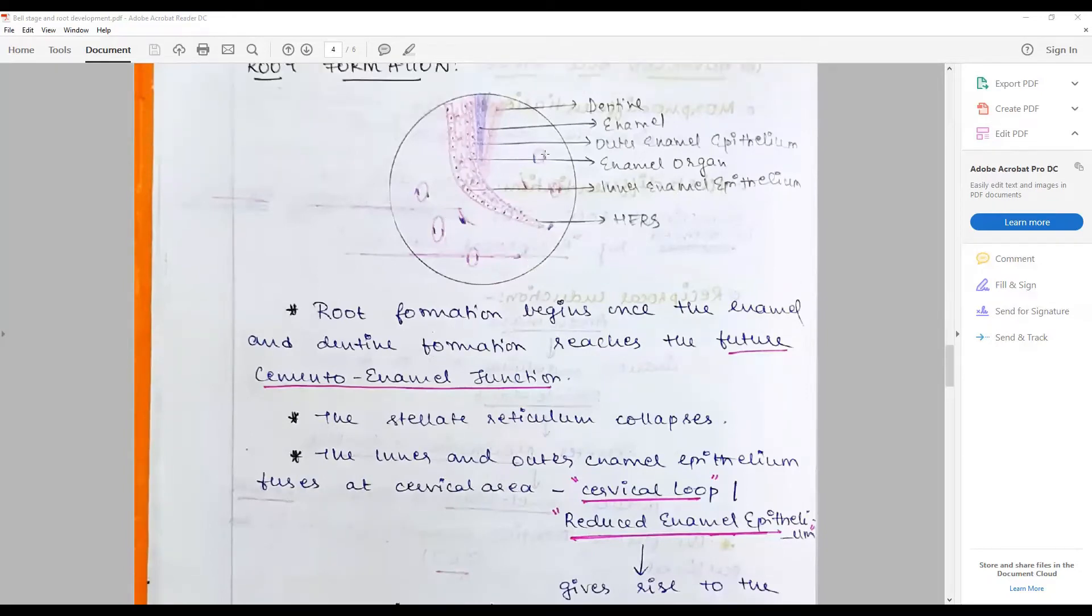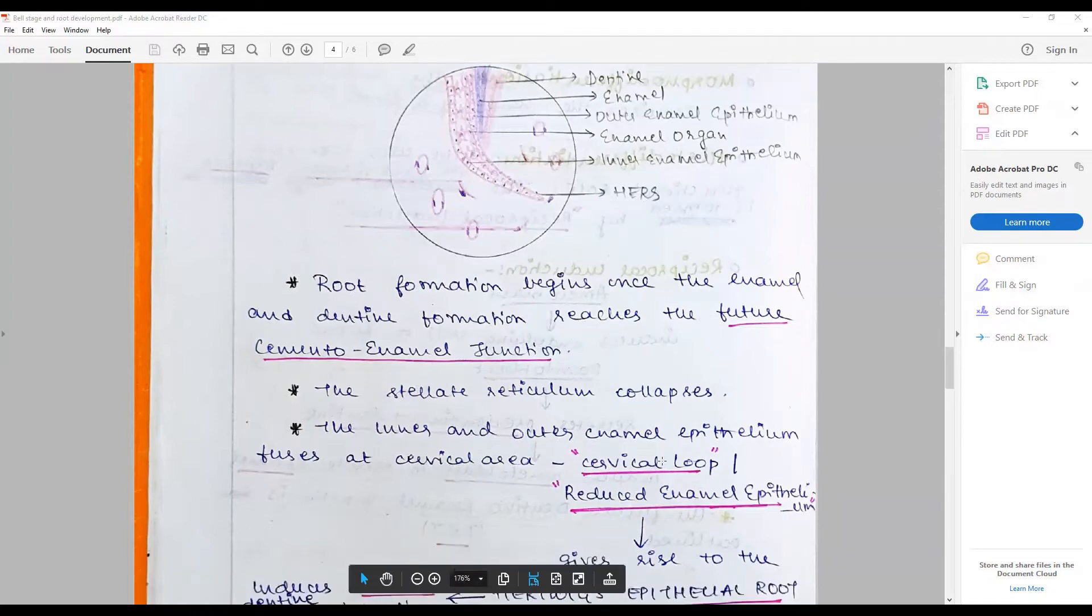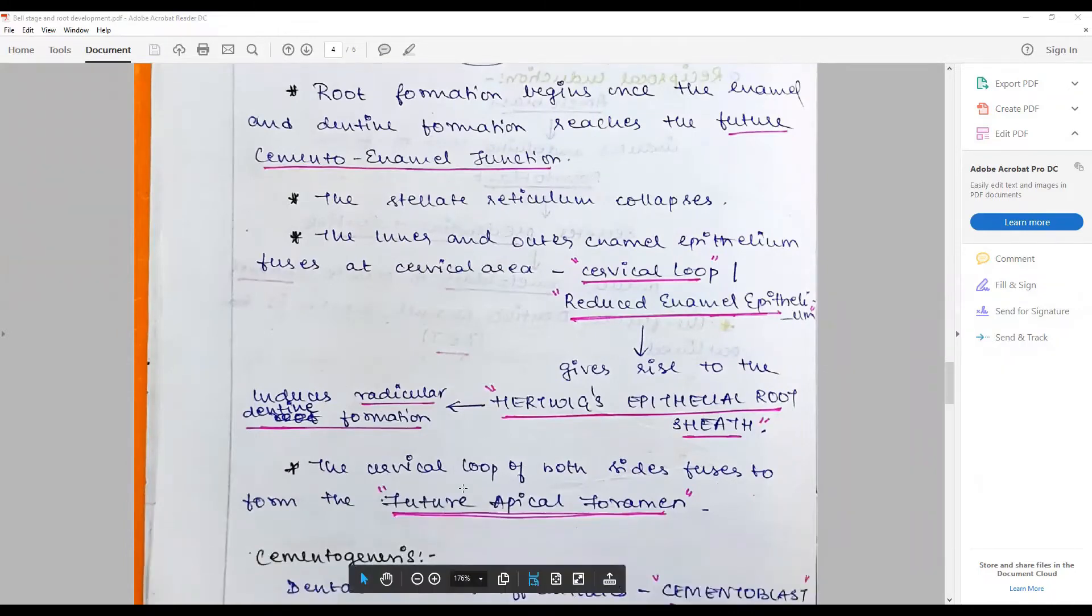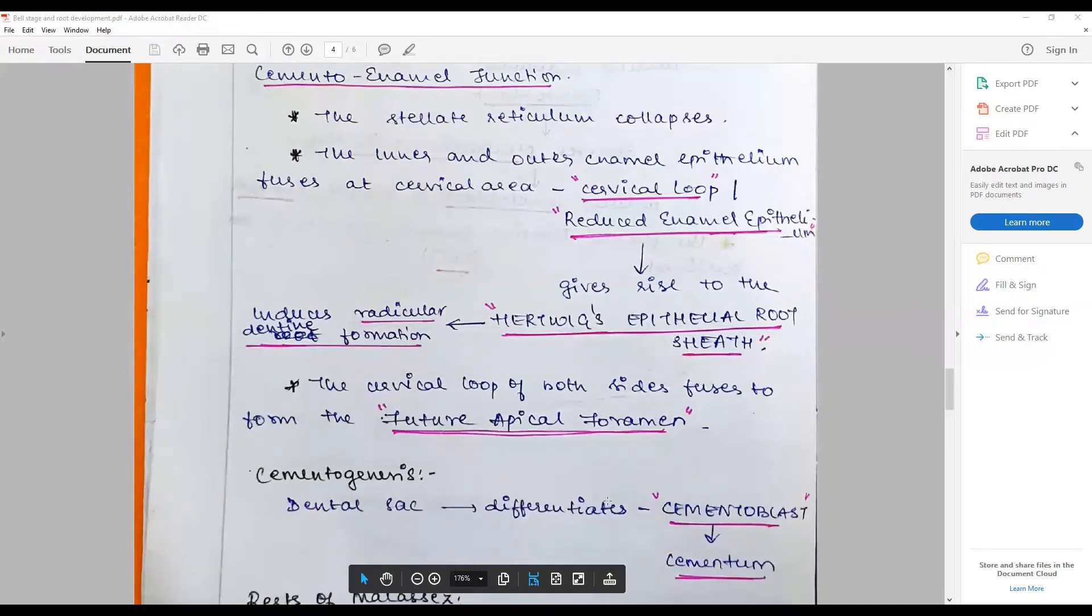So root formation begins once the enamel and dentin formation reaches the future cemento-enamel junction, or once the crown portion is completed, at which the stellate reticulum and stratum intermedium start to collapse. The inner and outer enamel epithelium fuse at the cervical area to form a structure called the cervical loop, or what we call reduced enamel epithelium, which gives rise to Hertwig's epithelial root sheath, and this is responsible for root formation. The cervical loop of both sides fuses to form the future apical foramen when it progresses downwards.